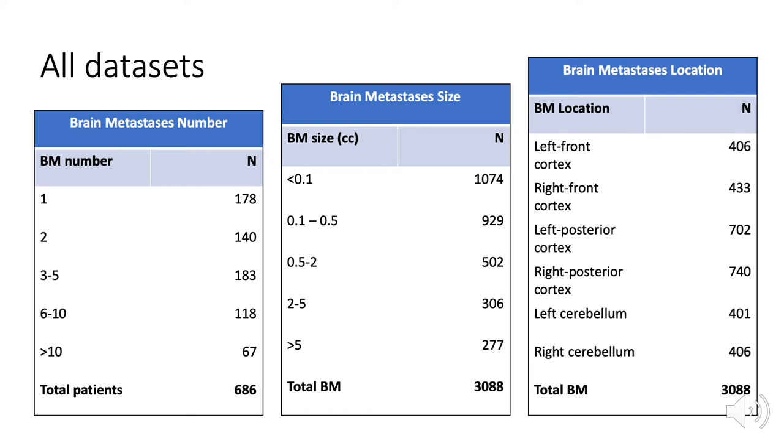We can see in the middle table that most brain masses are very small. We have around 2,000 brain masses smaller than 0.5 cc. That means most objects that we are trying to use the model to find and detect are very small objects. In segmentation tasks, when the object is very small, it becomes very difficult. I think this is the main limitation of this task.